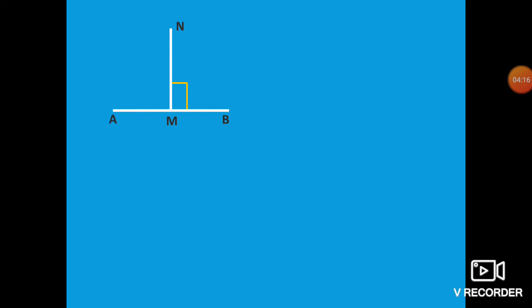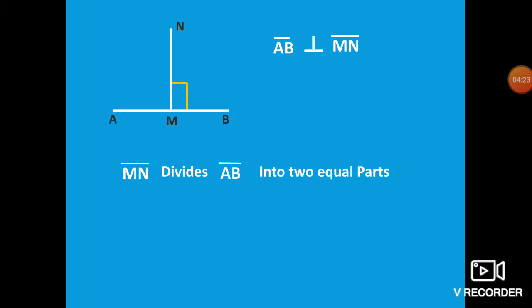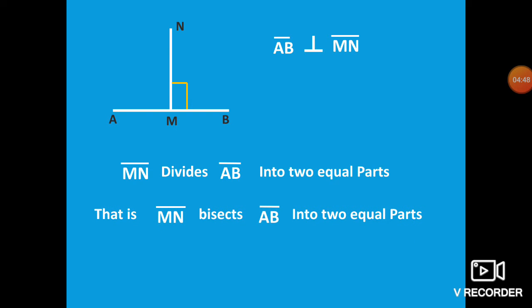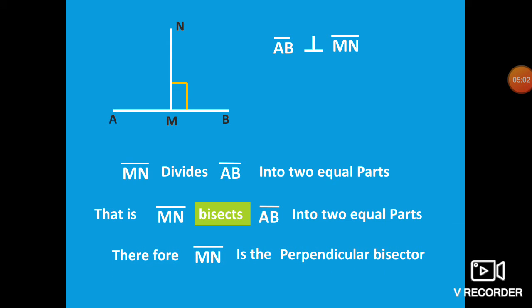Here you can see Line segment AB perpendicular to Line segment MN. Line segment MN divides Line segment AB into two equal parts, meaning M is the midpoint of Line segment AB. Therefore, MN bisects AB into two equal parts. Bisects is a new word — bisects means divides into two equal parts. So MN bisects AB, and that is the name for MN.